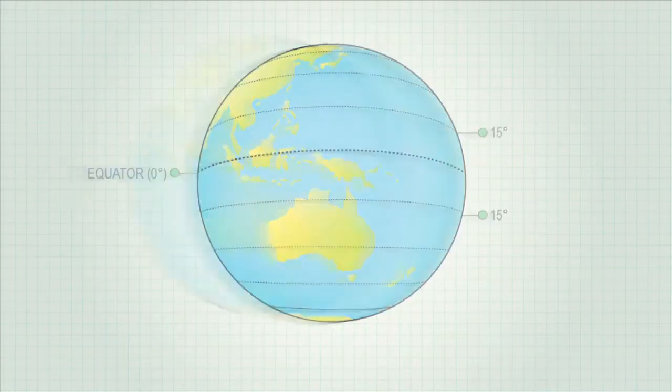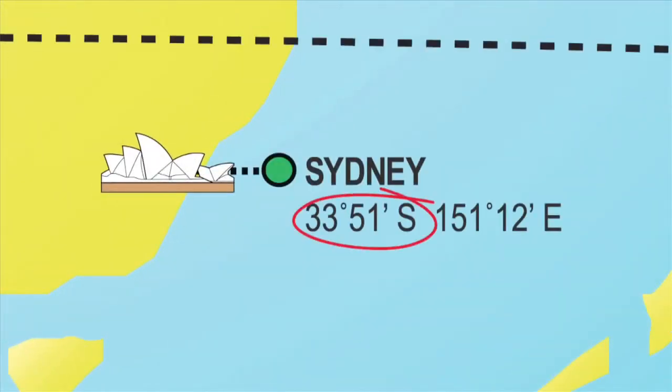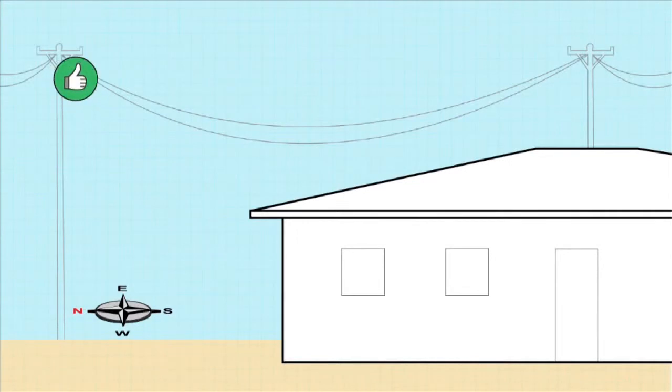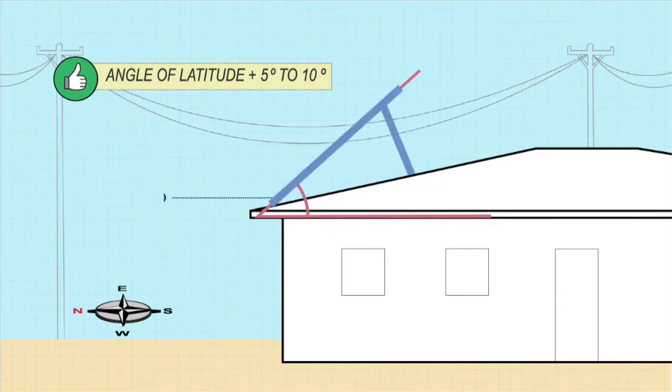The ideal inclination is the angle of latitude plus 5 to 10 degrees. Sydney's latitude is 33.5 degrees, so an ideal angle of inclination would be around 40. However, plus or minus 15 degrees would still provide adequate performance.